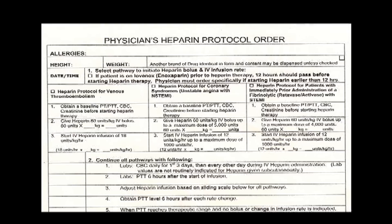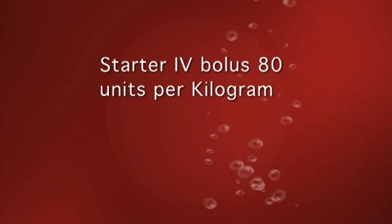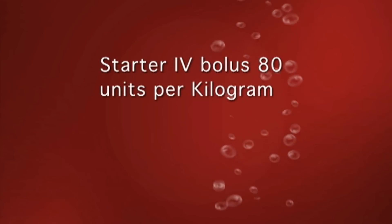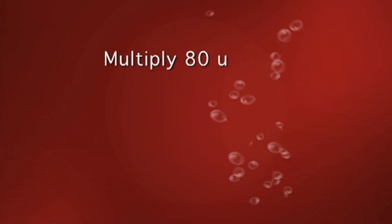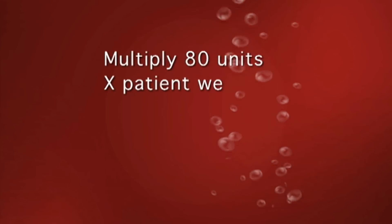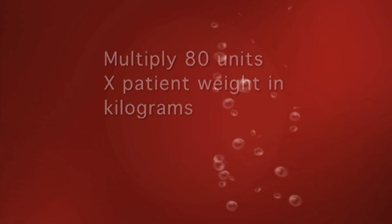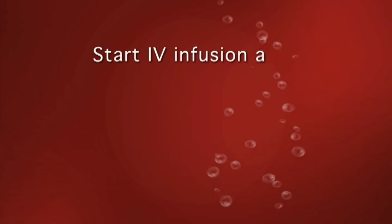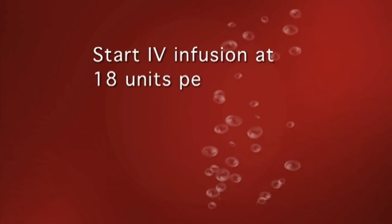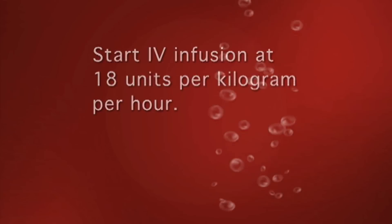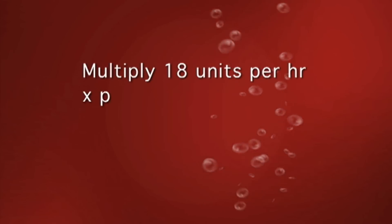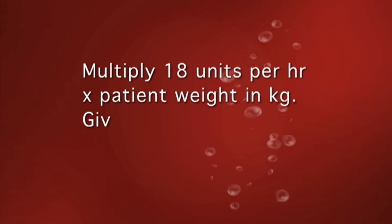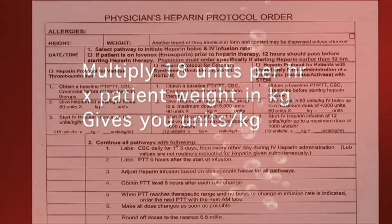For MedSurg, pathway one is your guide. After the baseline labs have been drawn, you will give a starter IV bolus of 80 units per kilogram — multiply 80 units times the patient's weight in kilograms. Then you will start the IV heparin infusion of 18 units per kilogram per hour, calculated by multiplying 18 units per hour times the patient's weight in kilograms.